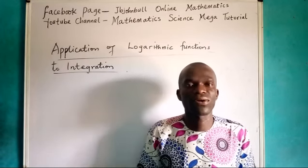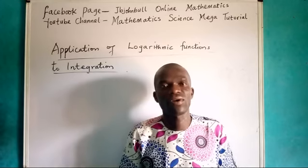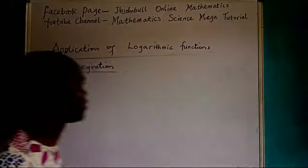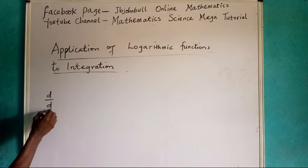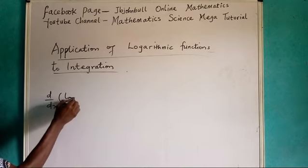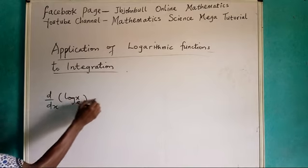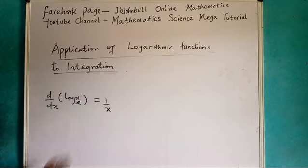Last time we discussed the derivative of logarithm base e. We said the derivative of log x base e is simply 1 over x.